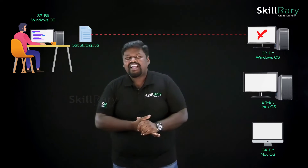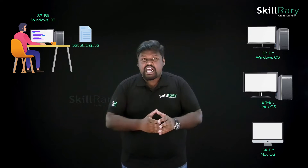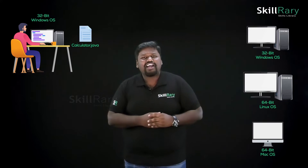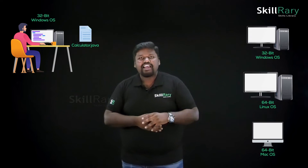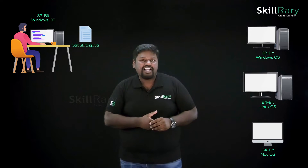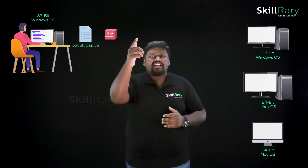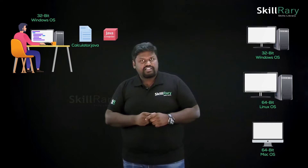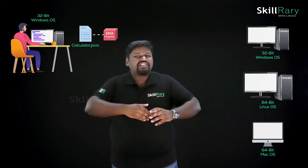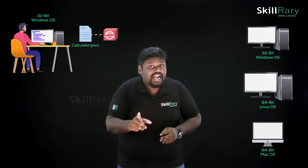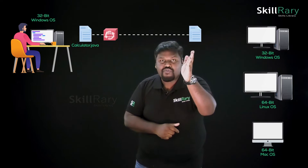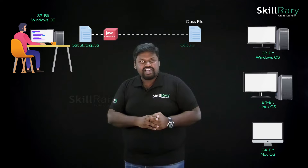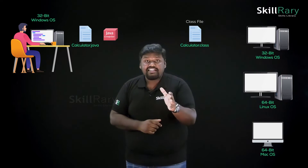This Java source file is also a high-level language, so it is not directly understandable by the machine. We need a compiler — a Java compiler — downloaded and installed for the 32-bit Windows machine. This source file is given to the Java compiler, which translates it and generates a new file known as a class file with the extension .class.